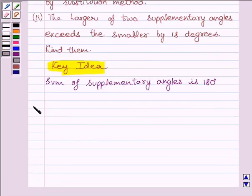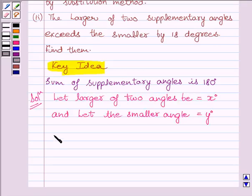Let us start with the solution now. Let the larger of the two angles be equal to x degrees and the smaller angle equal to y degrees. Now, according to the question, angles are supplementary, so their sum must be equal to 180 degrees.